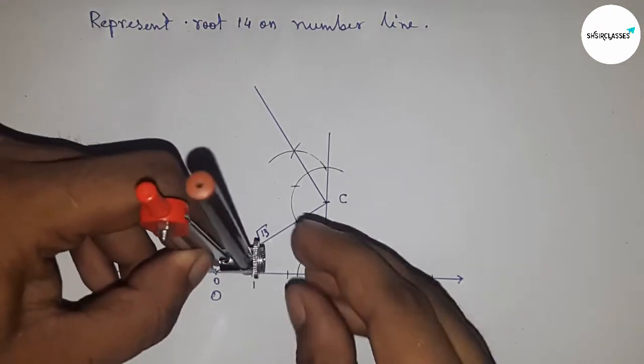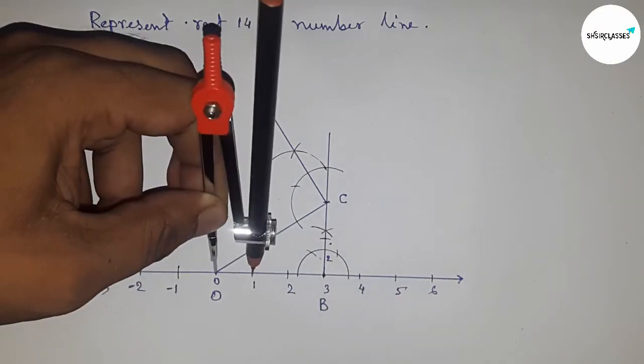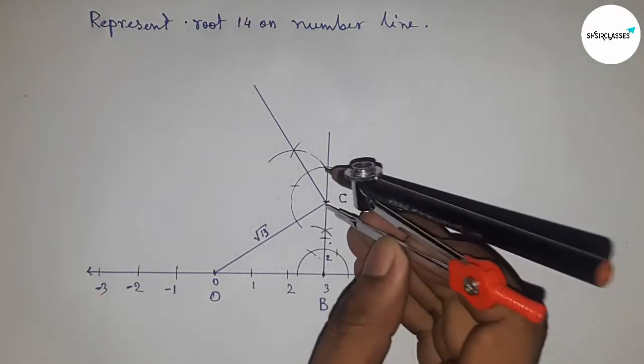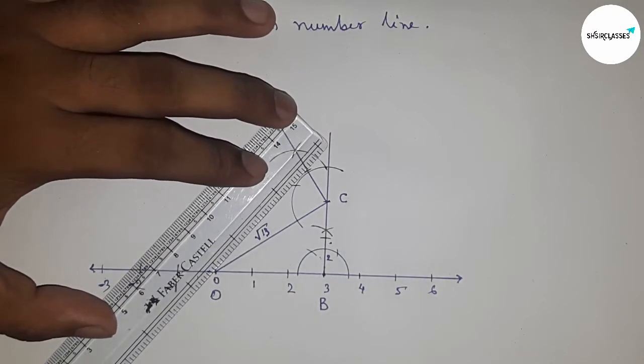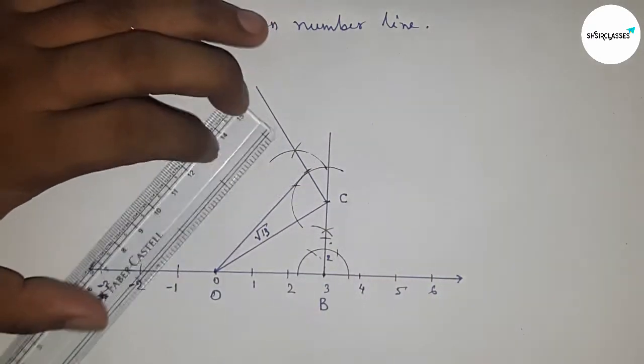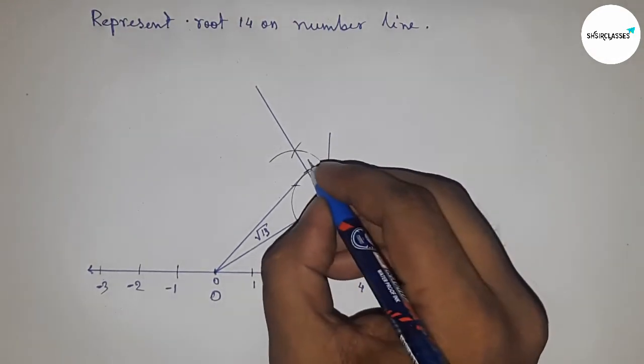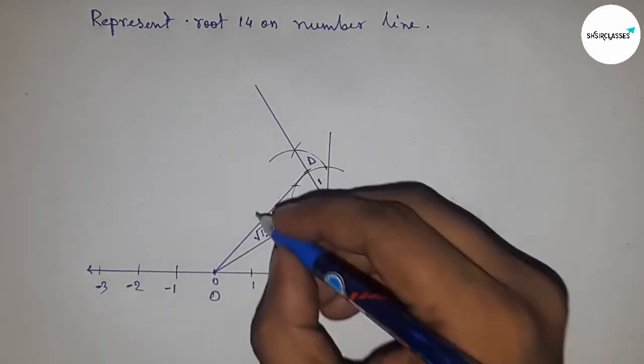Next, take the length between any two numbers with the compass, put the compass here and cut. Join this point - this is one unit and this is point D.